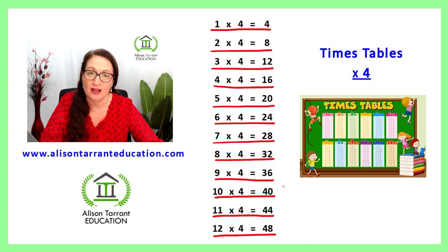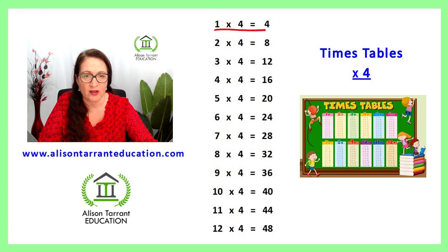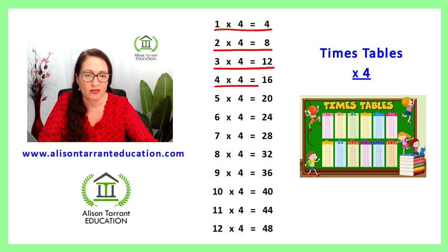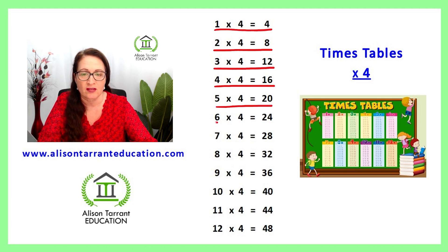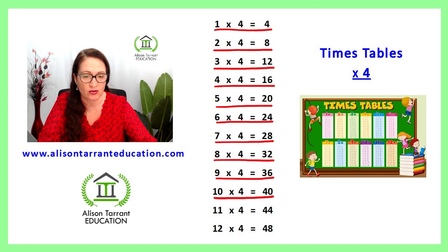Well done. Let's practice that again. 1 times 4 is 4, 2 times 4 is 8, 3 times 4 is 12, 4 times 4 is 16, 5 times 4 is 20, 6 times 4 is 24, 7 times 4 is 28, 8 times 4 is 32, 9 times 4 is 36, 10 times 4 is 40, 11 times 4 is 44, 12 times 4 is 48.